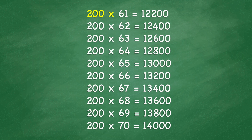200 times 61 equals 12,200. 200 times 62 equals 12,400. 200 times 63 equals 12,600. 200 times 64 equals 12,800. 200 times 65 equals 13,000. 200 times 66 equals 13,200.